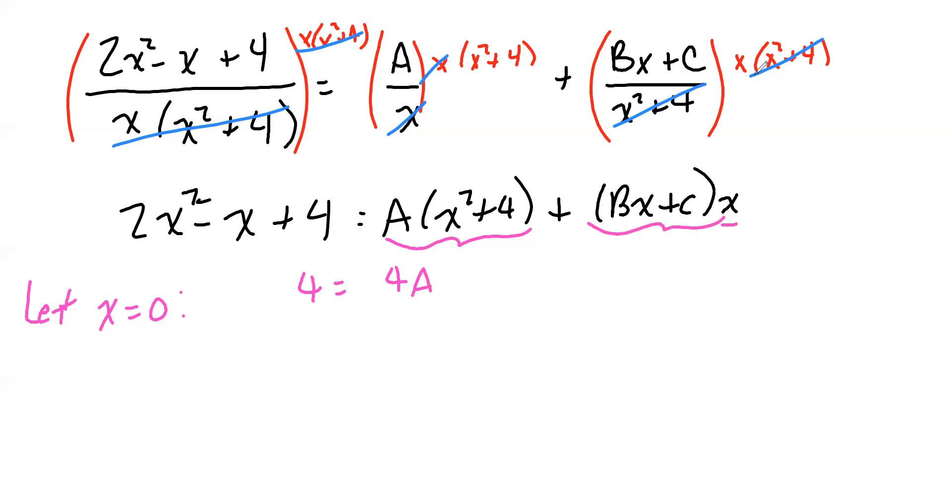When I put 0 for x here, I'll get 4A. When I put 0 for x over here, that x is going to zero out the entire addend. So it's gone.